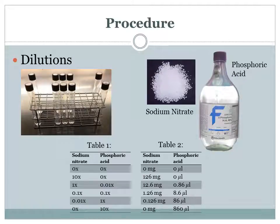The first table shows the amount of phosphoric acid and sodium nitrate I added as a multiple of the median amount in urban runoff, which is 1x. The second table shows what those values actually are.